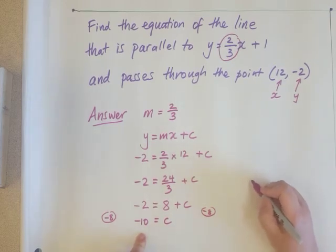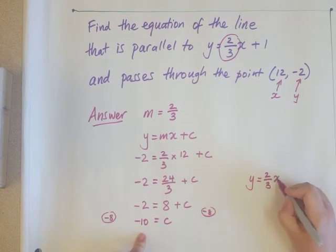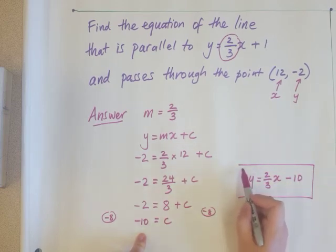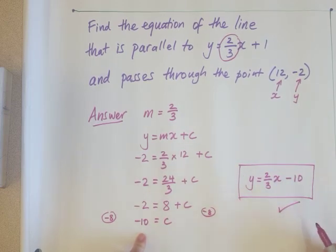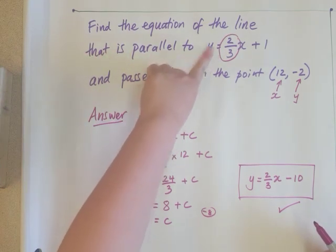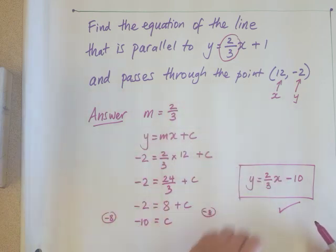So our final answer, therefore, the equation is y equals 2 thirds x minus 10. And this is the equation of a line parallel to this line here with the same gradient, and it goes through the point 12, negative 2.